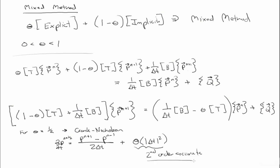And so that's one reason to use a mixed method, is that it's more accurate in time. So we used the central difference method to approximate our spatial derivative, so we already have second order error in space, whether we are doing explicit or implicit time integration.